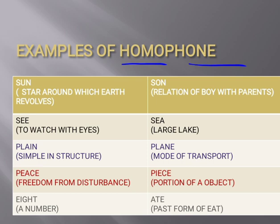Examples of homophones: 'sun' — star around which earth revolves (suraj), and 'son' — relation of boy with parents (beta). 'Sea' and 'see' — the way you pronounce them is same but spelling is different as well as meaning is different: sea means samundar, see means to watch with eyes. 'Plane' and 'plain' — plane is a mode of transport (hawai jahaz), plain means simple in structure. 'Peace' and 'piece' — peace means aman (freedom from disturbance), piece means hissa ya tukda. '8' and 'ate' — 8 is a number, and ate is the past form of eat (khaana).